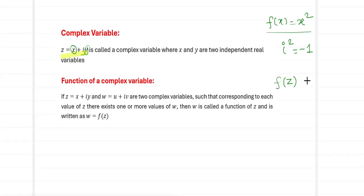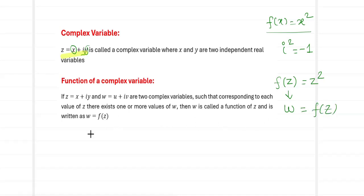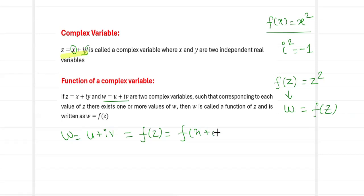Just as we defined a function using a real variable, we can replace the real variable with a complex variable and define a similar type of function. For example, f(z) = z². This kind of function, where a complex variable is used, is referred to as a complex function. This f(z) is represented by the variable w, so we write w = f(z). Therefore w = u + iv can be expressed as f(z) = f(x + iy).